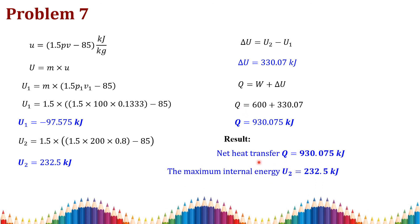In summary, the two results asked for are: the net heat transfer Q = 930.075 kJ, and the maximum internal energy attained during expansion is U2 = 232.5 kJ. Note that U1 is negative, so U2 is the maximum. Thank you.